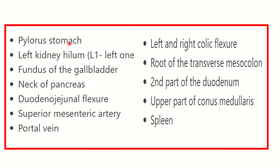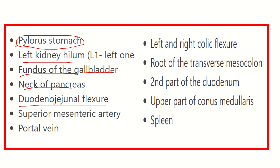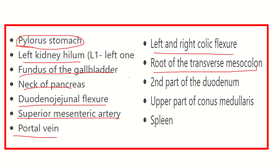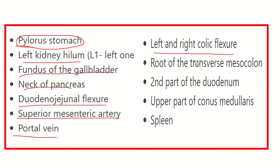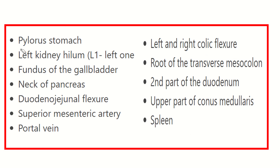The plane is named after the pylorus of the stomach — the transpyloric plane. Structures at this level include: the pylorus of the stomach, left and right kidney hila, fundus of the gallbladder, neck of the pancreas, duodenojejunal flexure, superior mesenteric artery, portal vein, left and right colic flexures, root of the transverse mesocolon, second part of the duodenum, upper part of the conus medullaris, and the spleen.